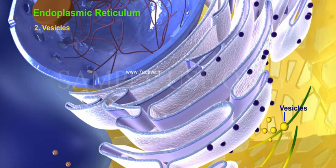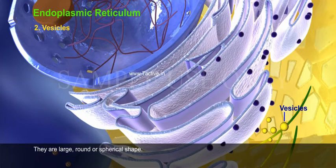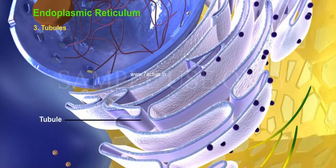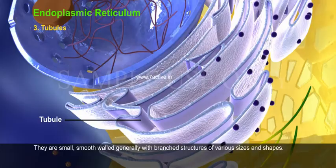2. Vesicle: They are large, round or spherical in shape. 3. Tubules: They are small, smooth-walled, generally with branched structures of various sizes and shapes.